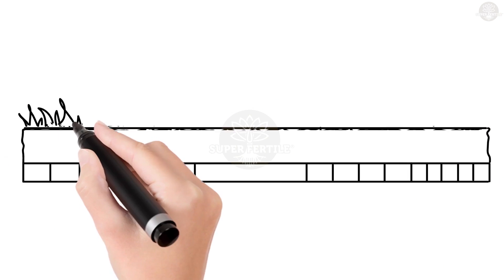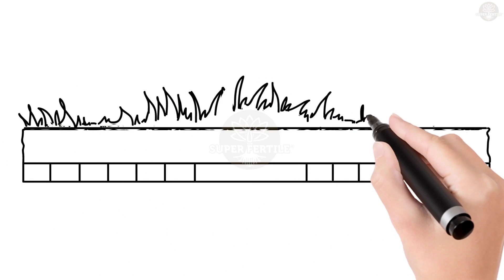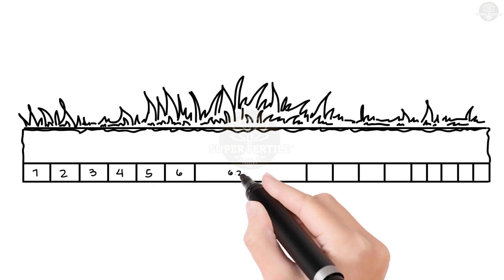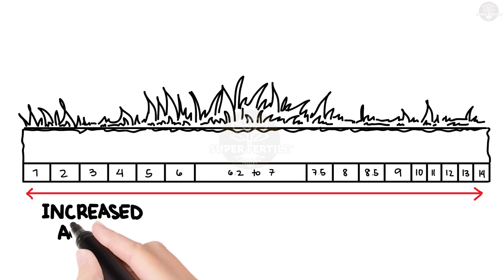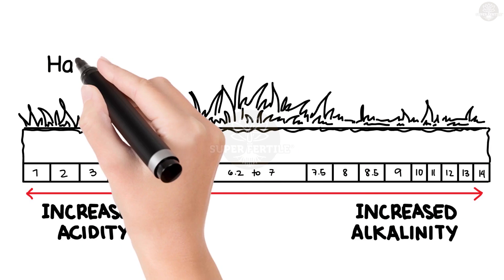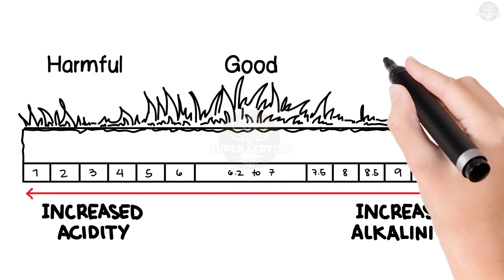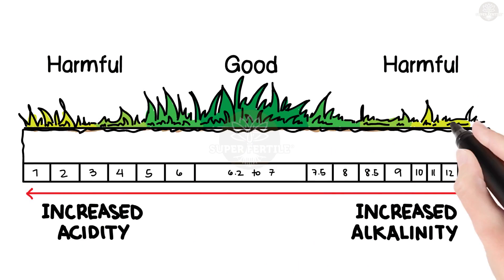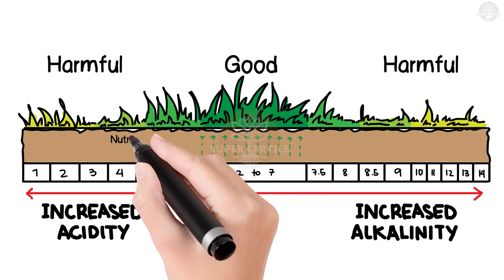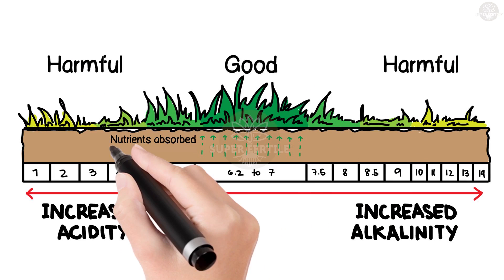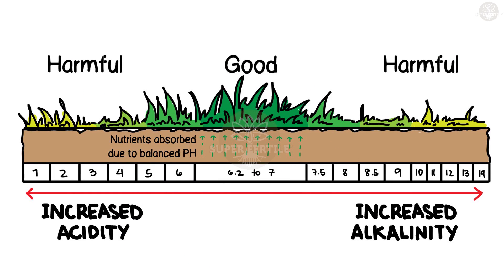Soil pH is the measure of the acidity or alkalinity of your soil. Either too much alkalinity or excessive acidity is harmful. For healthy plants, the pH should be somewhere between 6.2 and 7.